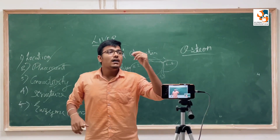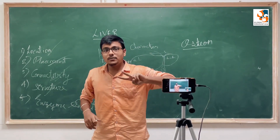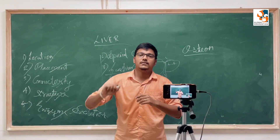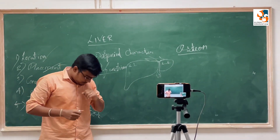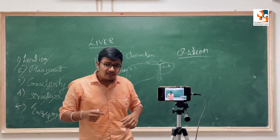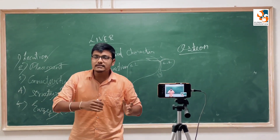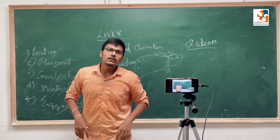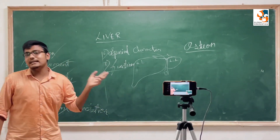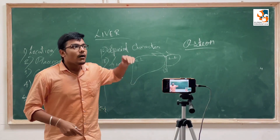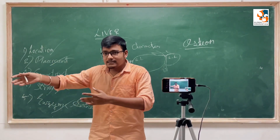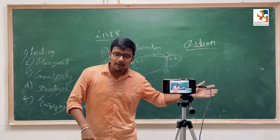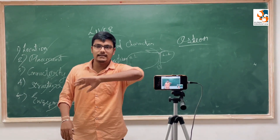Number four, the structure: this organ contains two major lobes — left and right — and two minor lobes. Number five, the secretion: this organ contains hepatic cells which secrete bile. The bile is concentrated in a thin muscular sac called the gallbladder. The hepatic cells have a hepatic duct and the gallbladder has a cystic duct.